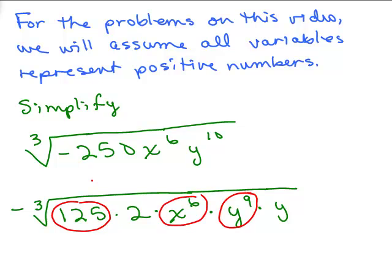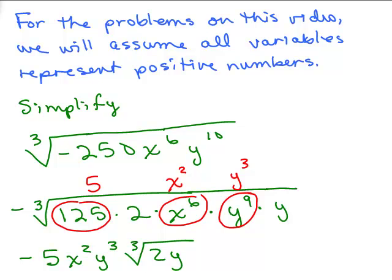Now we can pull out our perfect cubes. I can pull a 5 out. For x to the 6th, the cube root is x squared. Remember the easy way? Divide 3 into 6. That gives you the new exponent. For y to the 9th, 3 into 9 gives y cubed. Out in front, I put 5x squared y cubed. Underneath, I've got 2y left, and that's the answer.